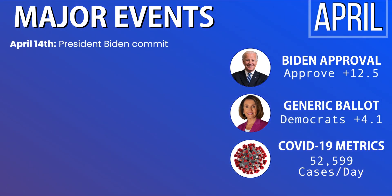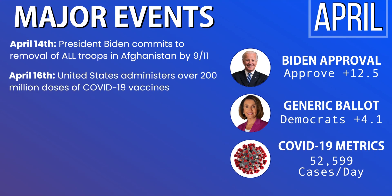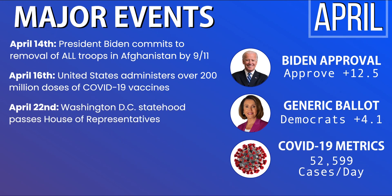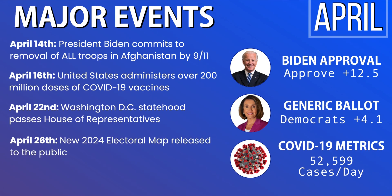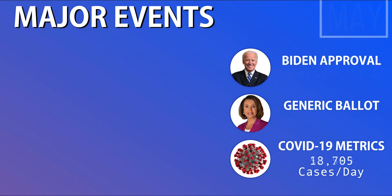In the month of April, on April 14th, President Biden announced America will withdraw all troops from Afghanistan by 9/11 — something that sticks with him throughout the remainder of the year. On April 16th, the United States administered over 200 million doses of COVID-19 vaccines, smashing Biden's previous record of 100 million doses. On April 22nd, Washington D.C. statehood passed the House of Representatives. On April 26th, the new 2024 electoral map was released and will be utilized through 2030. On April 28th, the California Secretary of State confirmed that Gavin Newsom will face a recall election. Biden remains at about plus 12.5%, the generic ballot dips to plus four for Democrats, and we're at about 52,000 COVID cases per day.